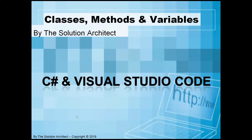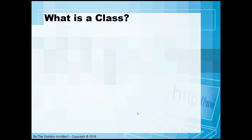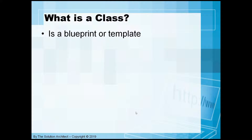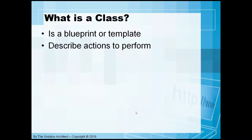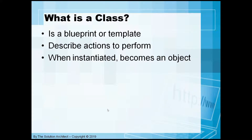So what is a class? A class is a blueprint or a template that describes a specific action to perform. It will execute whatever you tell the class to do. When you instantiate a class, it becomes an object.